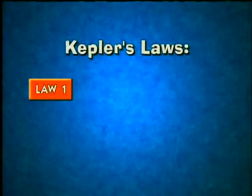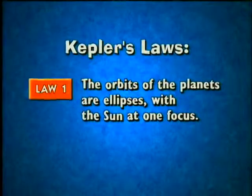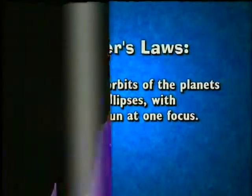Law 1: The orbits of planets are ellipses with the Sun at one focus. You know what an ellipse is — an oval. The other thing you need to know is what a focus is.